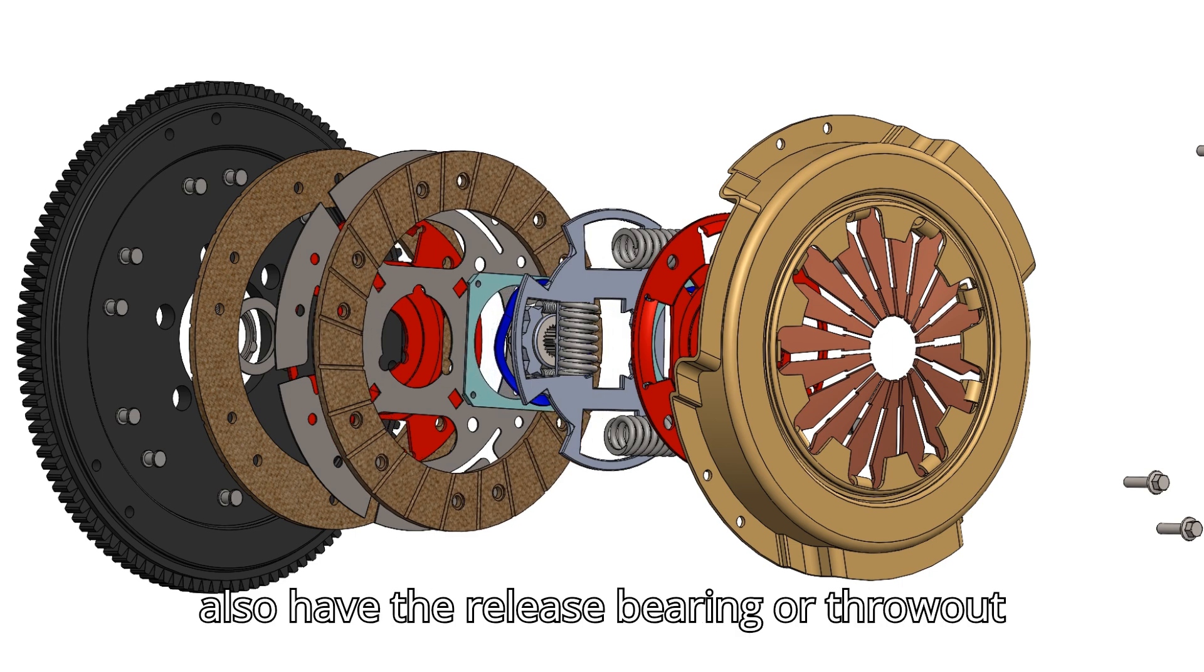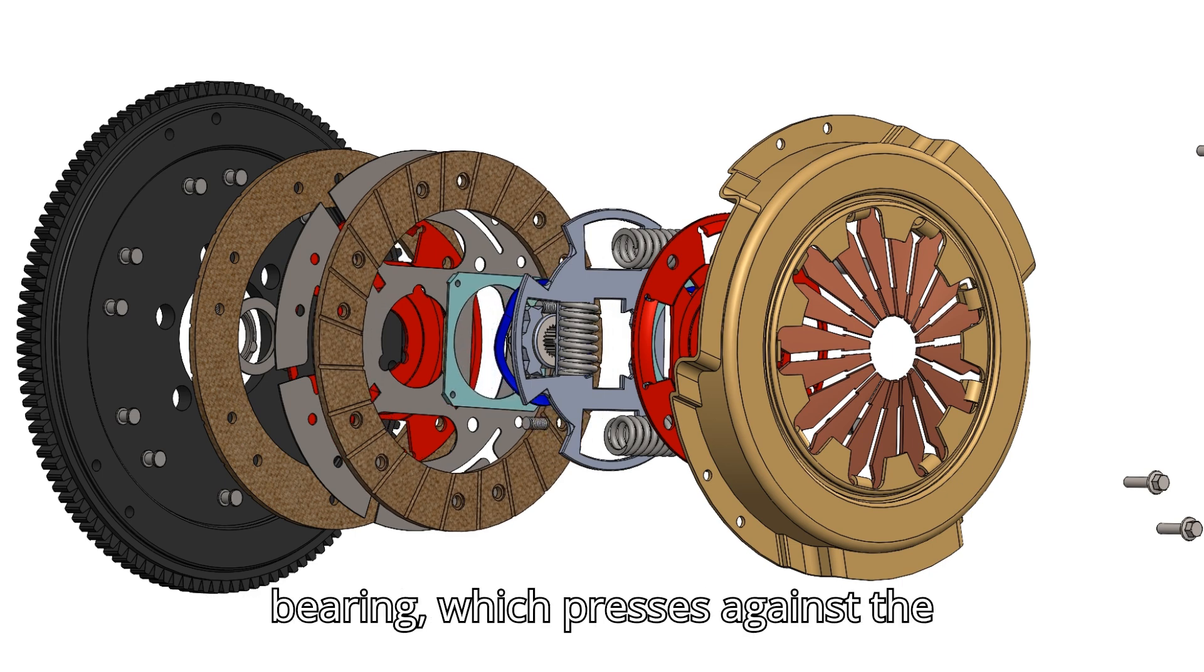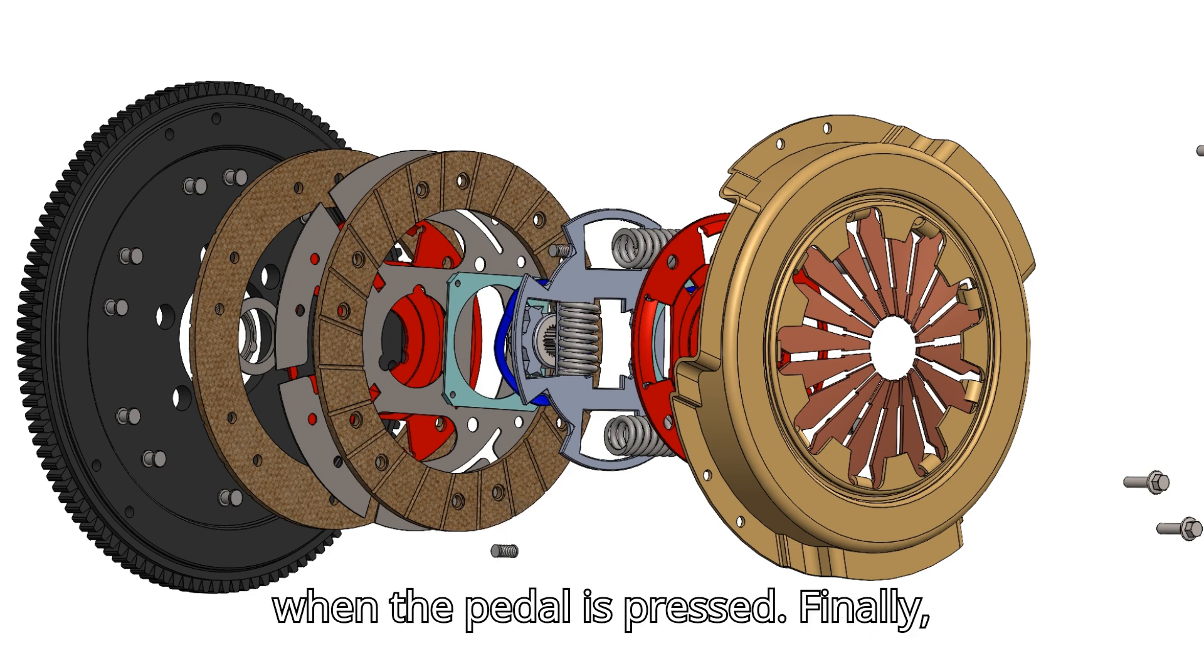We also have the release bearing or throw-out bearing, which presses against the diaphragm spring to disengage the clutch when the pedal is pressed.